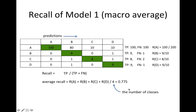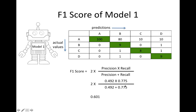We also need the recall value. For recall, we need the true positive and the false negative. For class A, the true positive is 100 and the false negative is 80 plus 10 plus 10. For class B, the true positive is 9 and the false negative is 0 plus 0 plus 1, and so on. The recall equation is TP divided by TP plus FN, and taking the macro average recall gives 0.775. Now with precision and recall, we calculate the F1 score, giving model 1 an F1 score of 0.601.